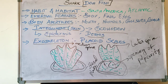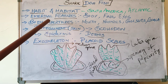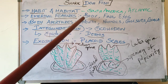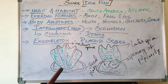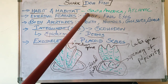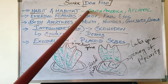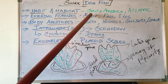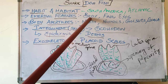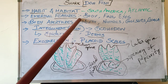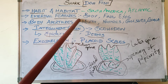Coming to the external features of shark — body, fins, and eyes. The body is elongated and spindle-shaped. It is compressed, and the body color is gray on the dorsal half and yellowish on the ventral part. When the shark is fully grown, it measures about 60 centimeters in length.